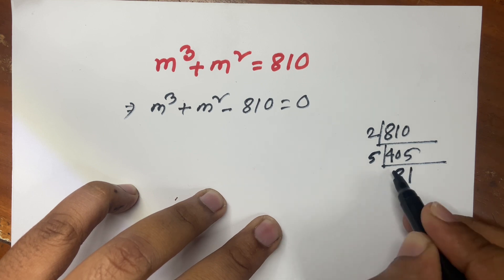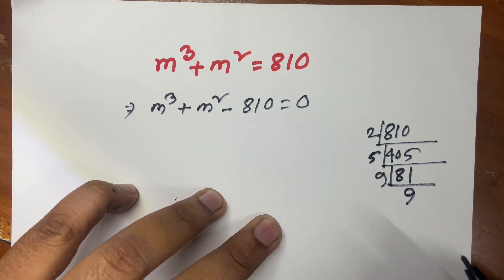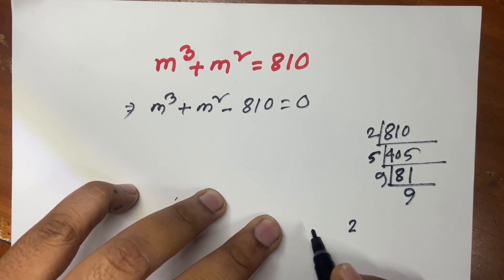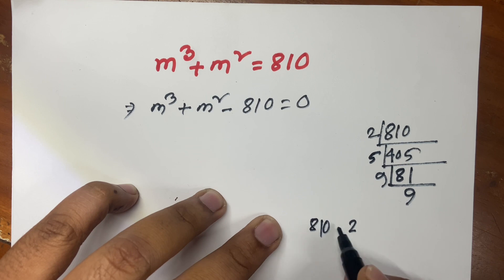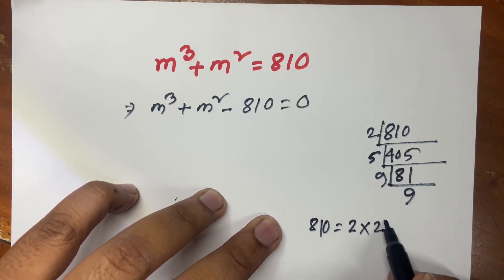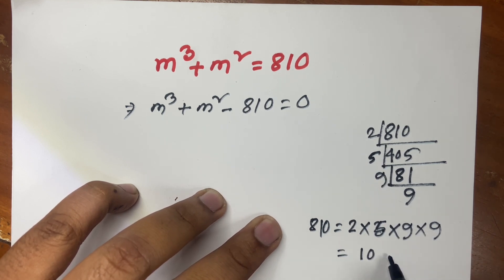If I divide by 9, I get 9. So 810 equals 2 multiply 5 multiply 9 multiply 9. Now I can say 810 equals 10 multiplied by 9 squared.